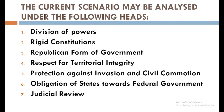The current scenario of the working of United States federalism can be analyzed under the following heads. The United States is often taken as a model of modern federalism. In the last 230 years, it might have undergone certain drastic changes, but it remains one of the ideal federations in the world. Here we will point out seven points: division of power, rigid constitution, republican form of government, respect for territorial integrity, protection against invasion and civil commotion, obligation of states towards the federal government, and finally, judicial review.